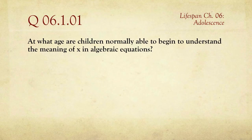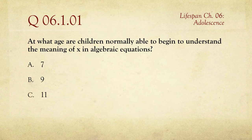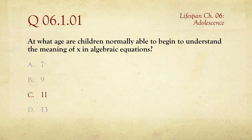The first question in this quiz is: at what age are children normally able to begin to understand the meaning of X in algebraic equations — so that's the variable X. The choices are 7, 9, 11, and 13. According to most of the research, the answer is 11.